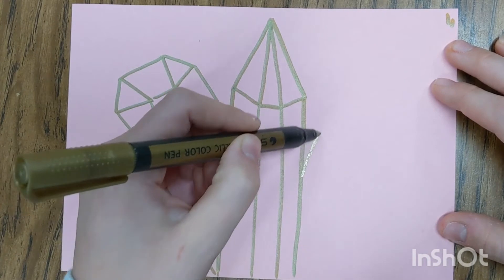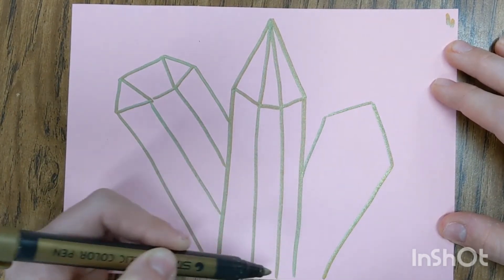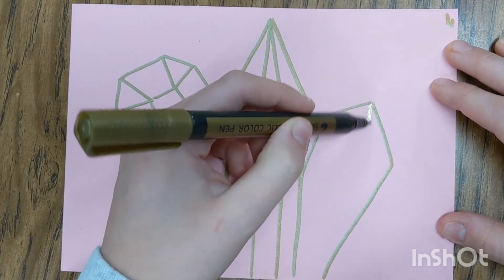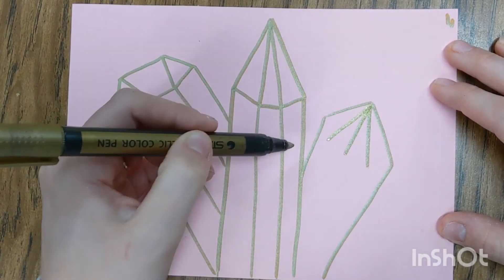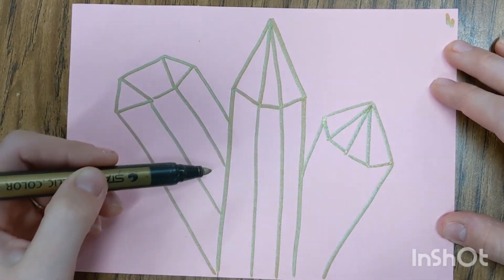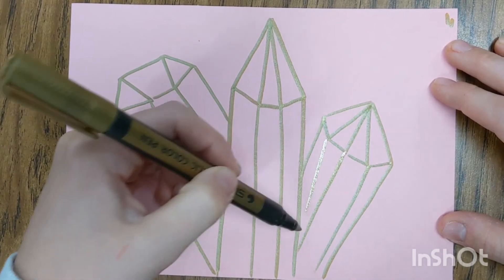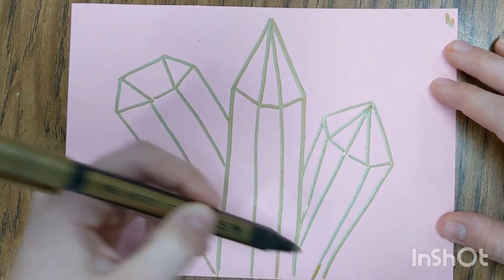For our next crystal we're going to do a similar shape to the very first one we drew. It kind of looks like a pencil. This time let's draw three lines that go from the top. This will make this crystal look a little more three-dimensional. Go ahead and connect those lines together with some smaller lines and then draw three big long lines that go down.